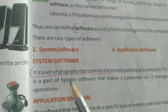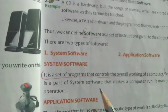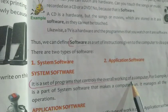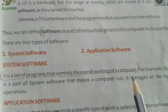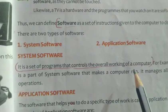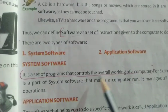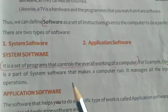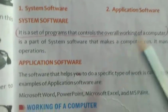System software is a set of software that controls the overall function of a computer. We can say it is like the principal who takes care of everything. Examples of system software include Windows, Android, and Linux operating systems.